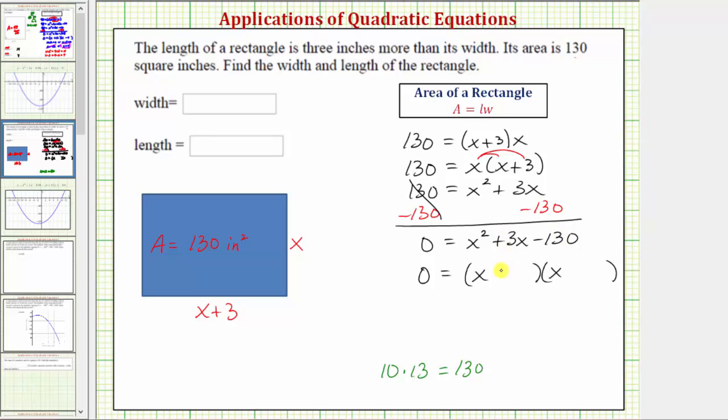So for positive 13, we write plus 13 here. For negative 10, we write minus 10 here. Again, 13 times negative 10 equals negative 130, and 13 plus negative 10 equals positive three. So this is now factored.